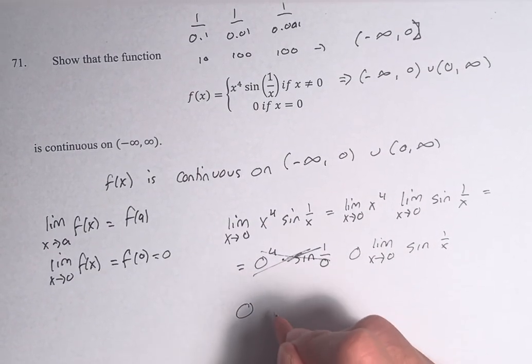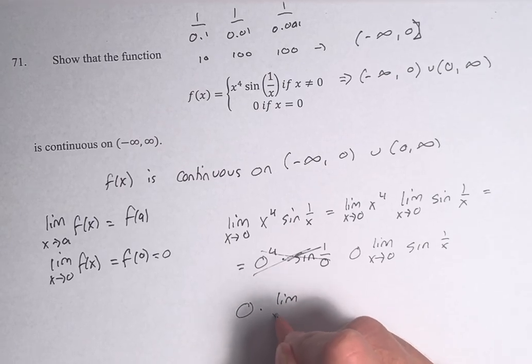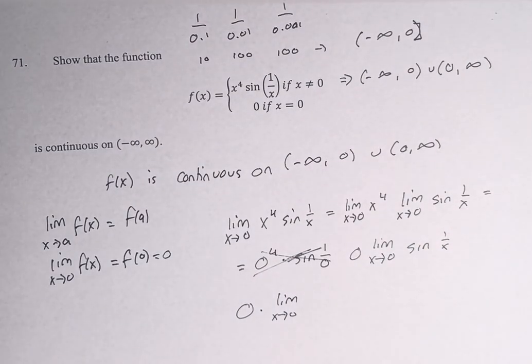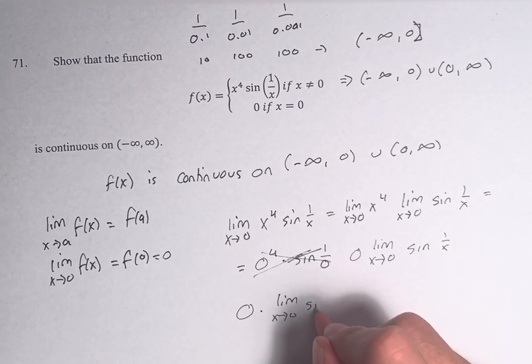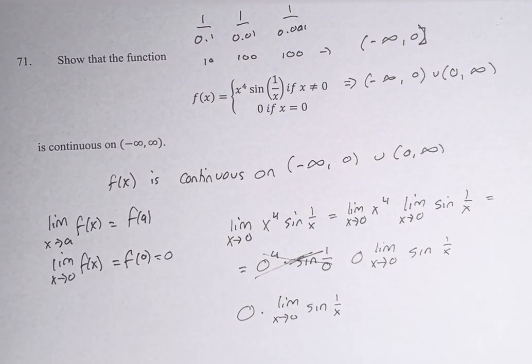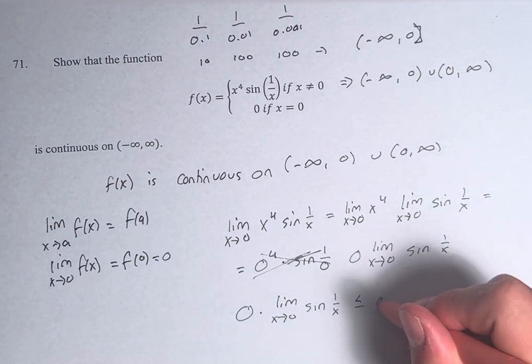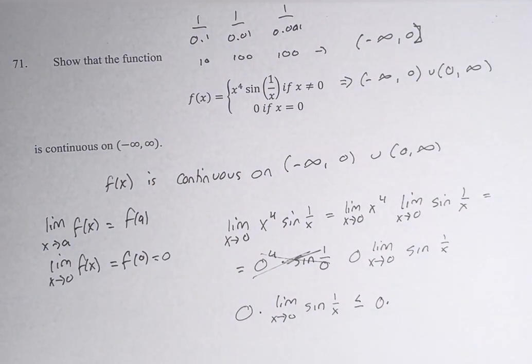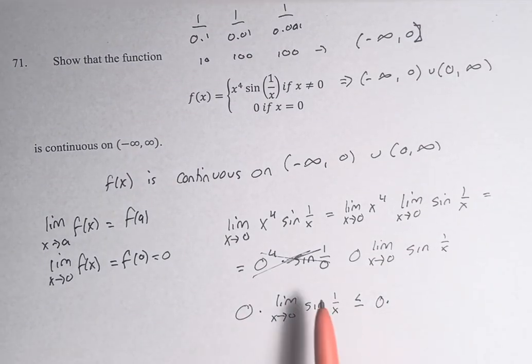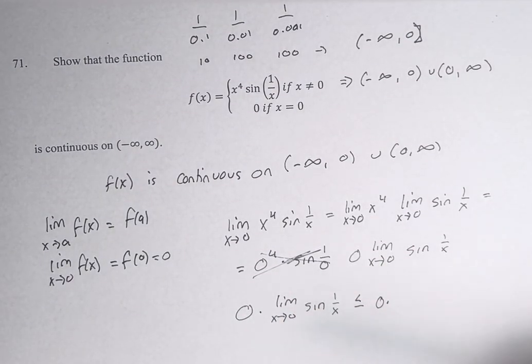This value, 0 times the limit as x approaches 0 of sine of 1 over x, we know that this is less than or equal to 0 times the maximum value that sine can have, right? The largest that this can be is 1.